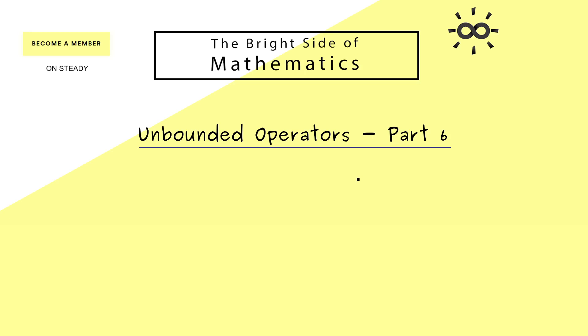And in today's part 6 we will talk about the so-called closed graph theorem, which connects closed operators to bounded operators. In fact this already explains the name of the theorem.